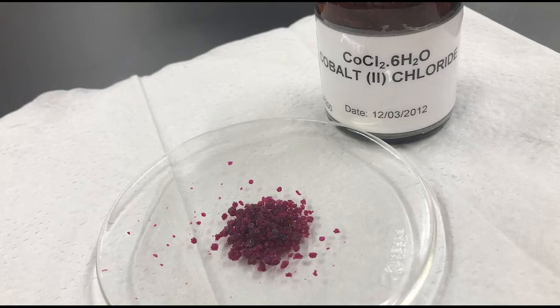As you can see, cobalt-2 chloride hexahydrate is a sort of purplish crystalline solid.